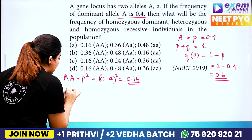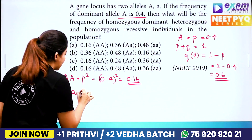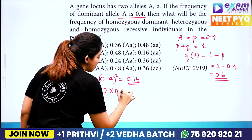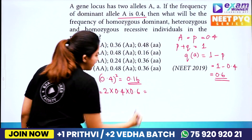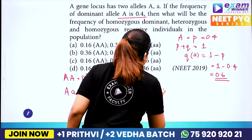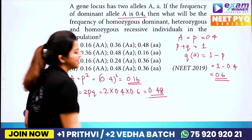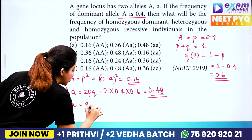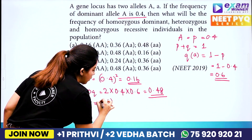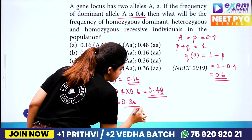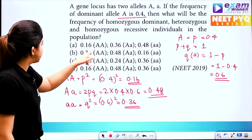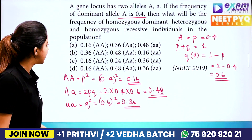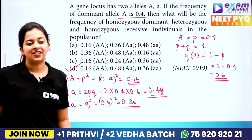For heterozygous, we calculate 2PQ. That is 2 times 0.4 times 0.6, which equals 0.48. For homozygous recessive, small a small a, we calculate Q squared. Q equals 0.6, so 0.6 squared equals 0.36. So the answer is: AA = 0.16, Aa = 0.48, aa = 0.36. That is option D.